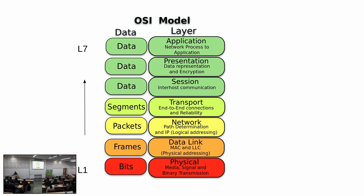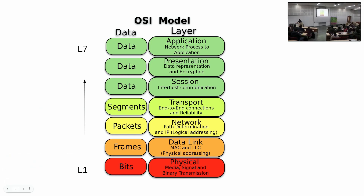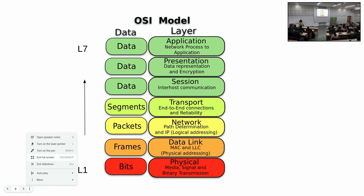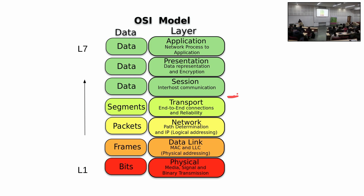I hope you guys know what this is — the seven-layer network model. The things you have seen over the last few days have been all over the lower half of this seven-layer model. It goes from L1 to L7. For instance, this is L2 — we did bridges, we did VLANs. All of that is L2.